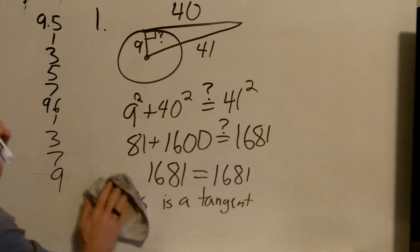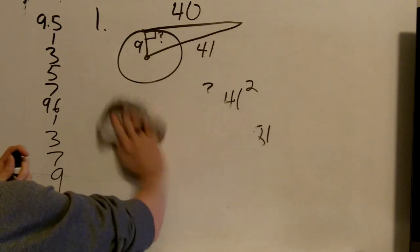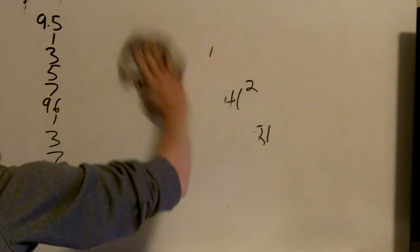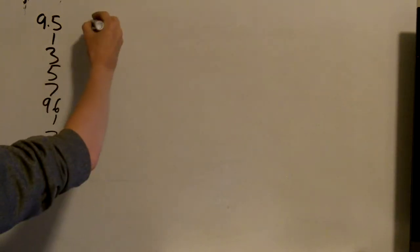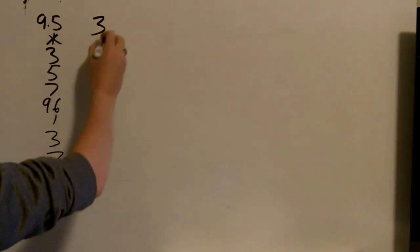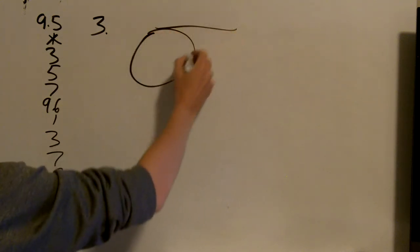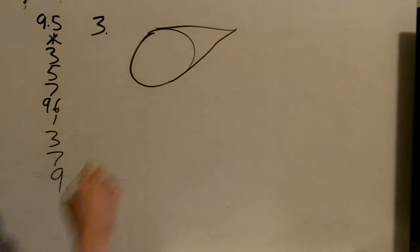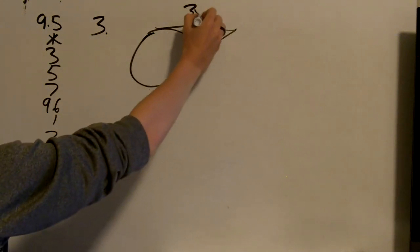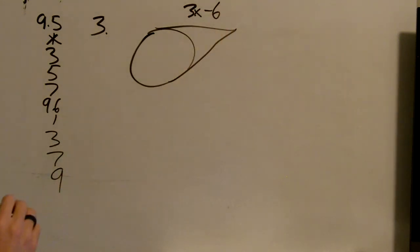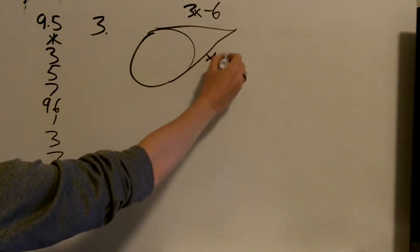Now for number 3, it shows a circle. So it shows a circle for 9.5, number 3. It shows a circle that has two tangents that meet at the same point. It says this one is 3x minus 6, and this one is x plus 10.